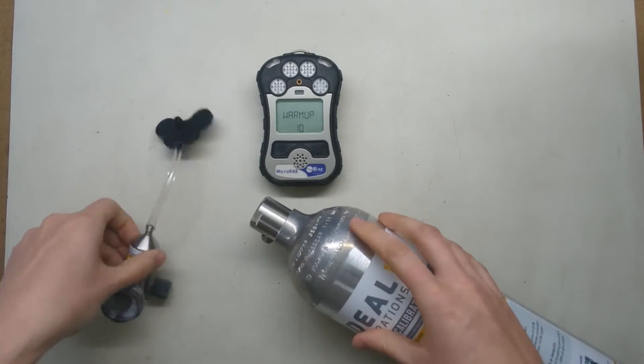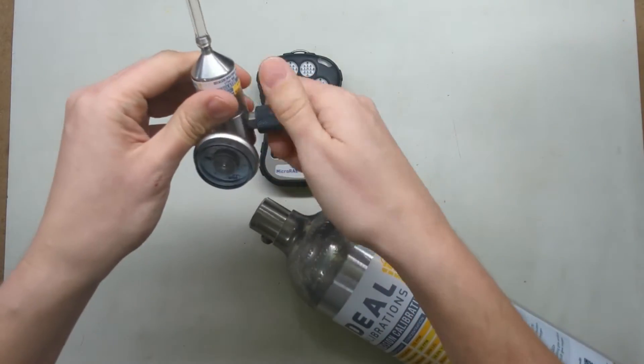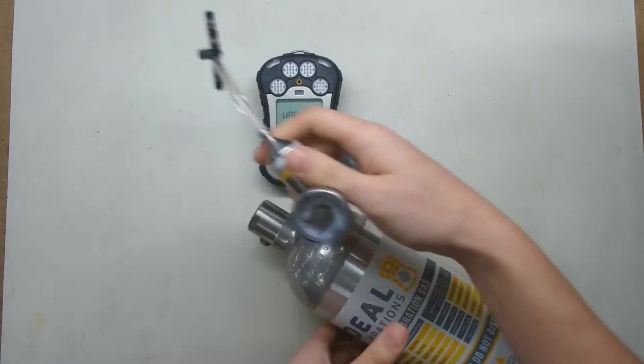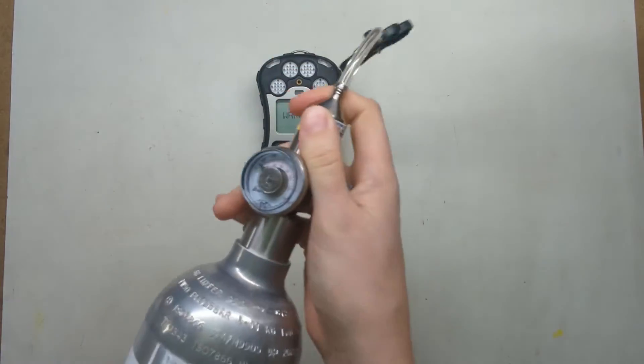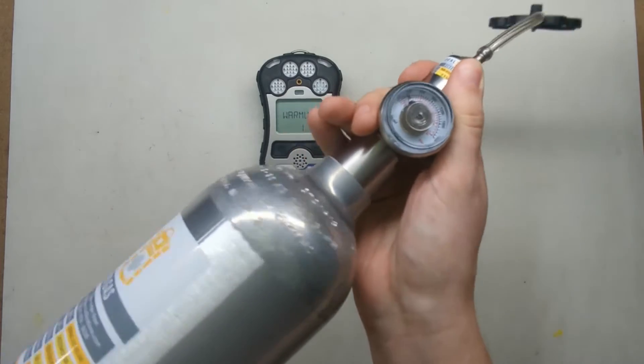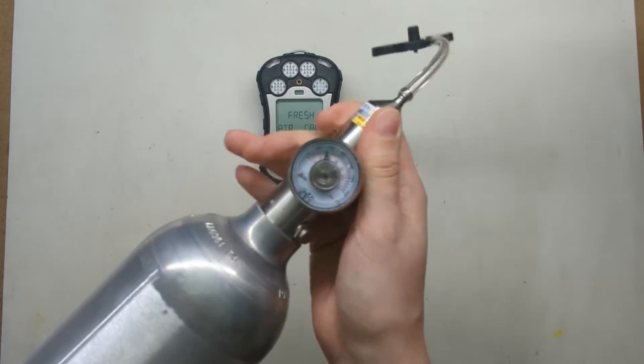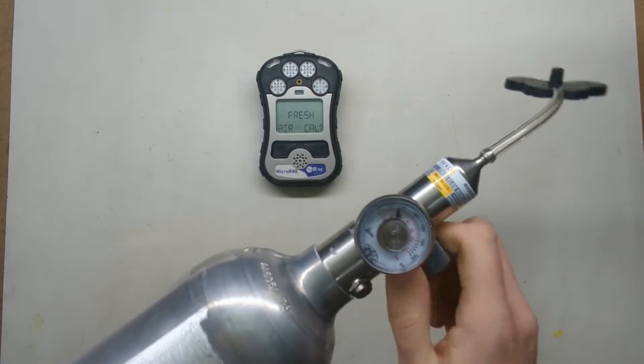To get this prepared, we're going to take our regulator and make sure we open this valve so we don't trap any moisture or air inside the cylinder. Screw it in just until it stops. You don't have to screw it in hard, it's an o-ring seal. Once it stops, turn your gas off.